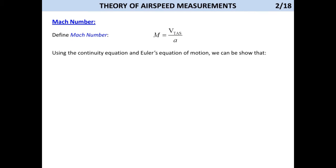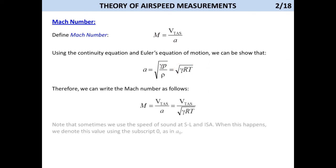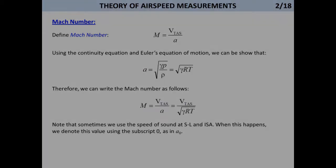Using the continuity equation and Euler's equation of motion, we can show that A is given by the equation shown. Therefore, we can write the Mach number as follows. Note that sometimes we use the speed of sound at sea level and standard atmosphere. When this happens, we denote this value using the subscript zero, as in A-naught.